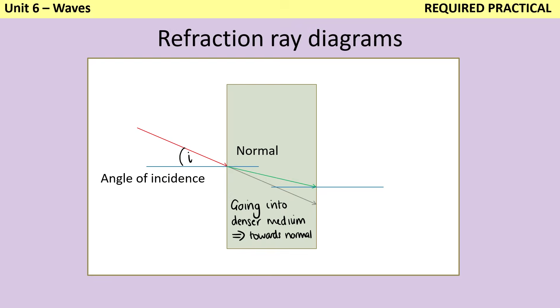And then to come out of it, I would draw another normal, and this time we're going from the denser material to the less dense material, so my light is going to refract away from the normal.